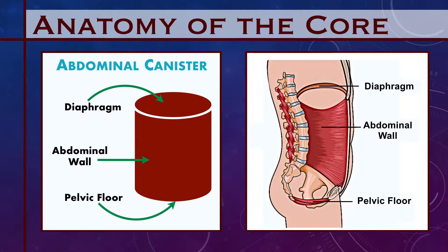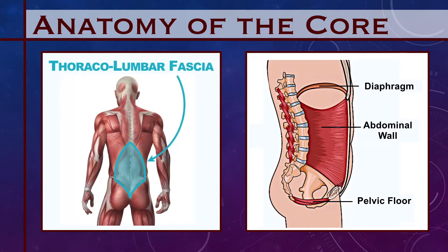The diaphragm forms the top of the canister. The pelvic floor muscles sit at the bottom, and lastly are the muscles of the abdominal wall — the internal and external obliques and the transversus abdominis muscle. The abdominal muscles wrap all the way around from front to back to form the wall of the canister. At the back, the abdominals blend into a very dense sheet of connective tissue called the thoracolumbar fascia. The gluteus maximus and the latissimus dorsi also blend into this fascia, connecting the shoulders and hips to the core.